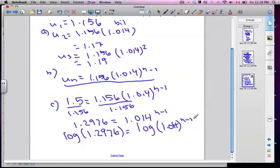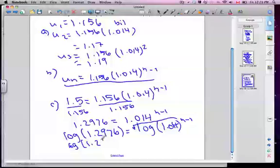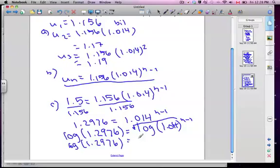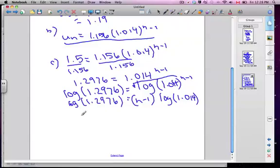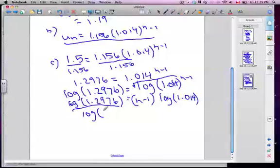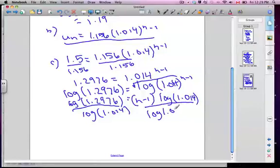Log 1.014 to the N minus 1. Now a little trick with logarithms. This exponent pops right down here. So I can say log 1.2976 equals N minus 1, times log 1.014. Now it's easy to solve for N. So there's two ways we could do this. We could divide by log 1.014 or we can distribute it. I like to divide the logs. Get rid of them. So I'm going to divide by log 1.014.